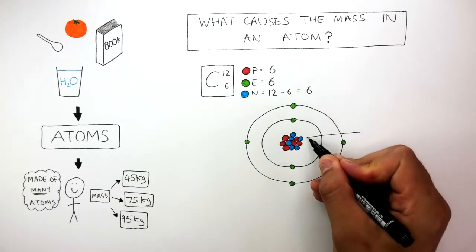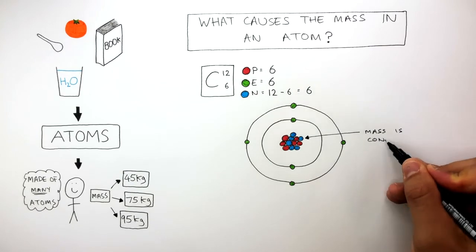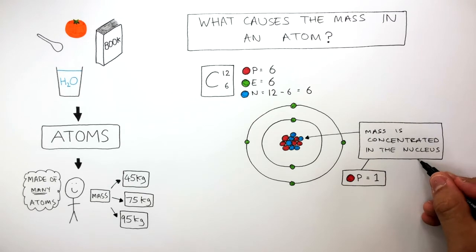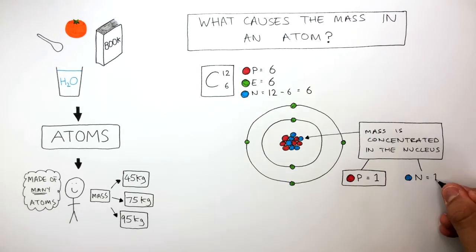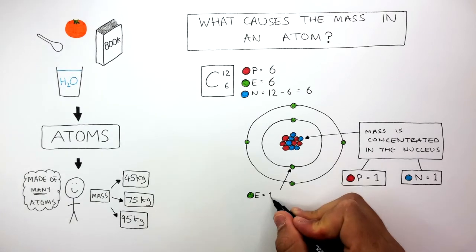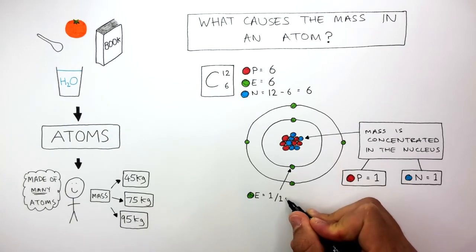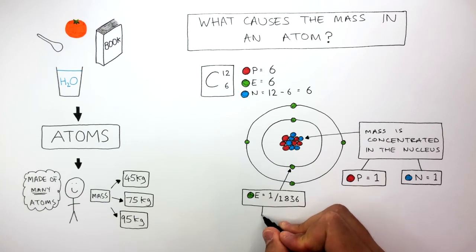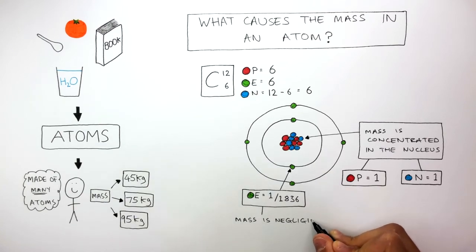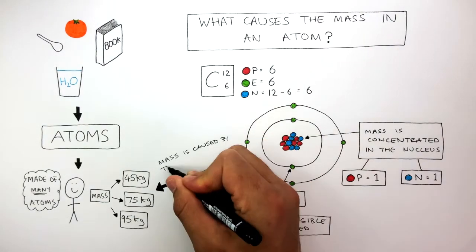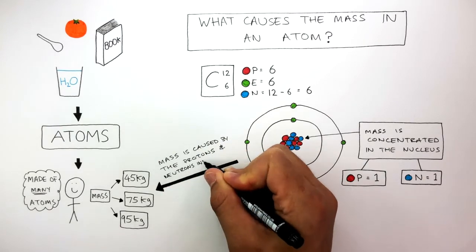We already know from a previous video, the mass is concentrated in the nucleus, as a proton has a mass of 1, and a neutron has a mass of 1, whereas an electron has a mass of 1 over 1836. The mass is so small, we say the mass is negligible, so the mass is ignored. So, going back to the original question, the mass is caused by the protons and neutrons in the atoms.